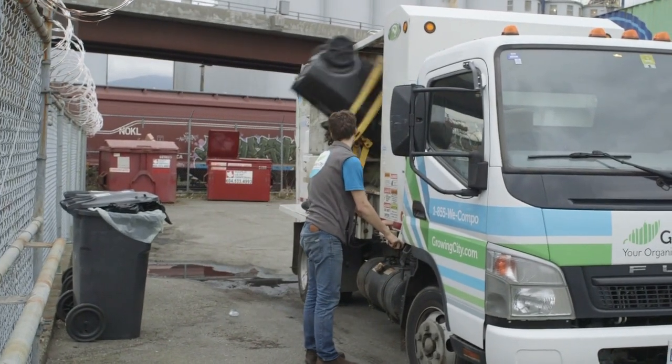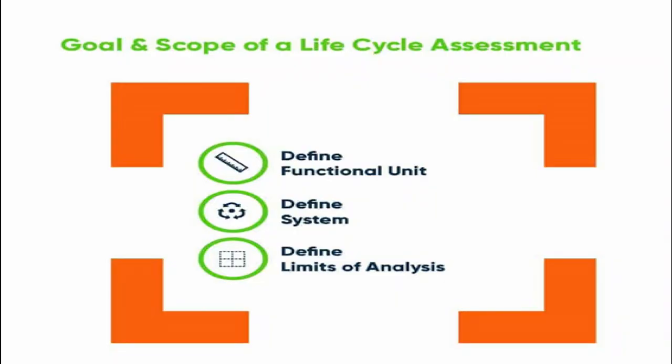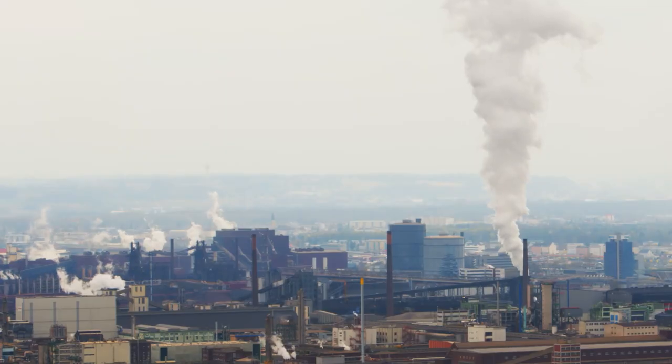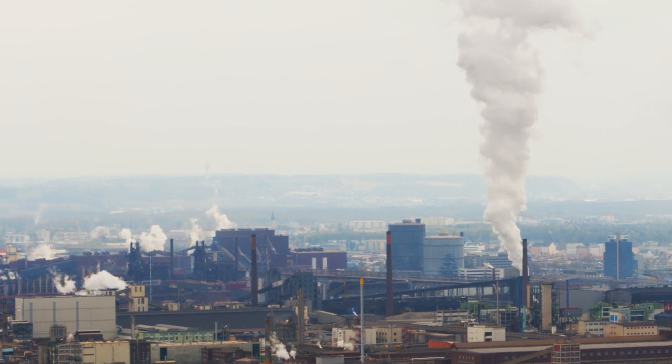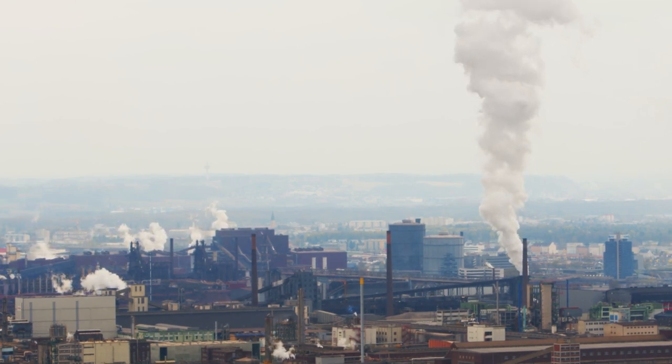The Stages of LCA. Now let's delve into the stages of LCA. Stage 1 is Goal and Scope Definition. Here, we define the purpose of the assessment and the boundaries of what will be analyzed. We decide which environmental indicators to focus on, such as greenhouse gas emissions, water use, or energy consumption.